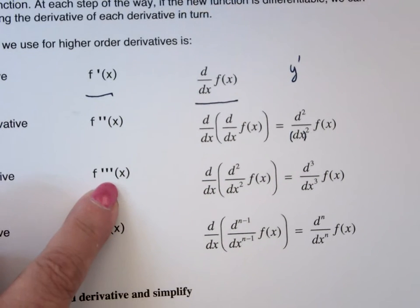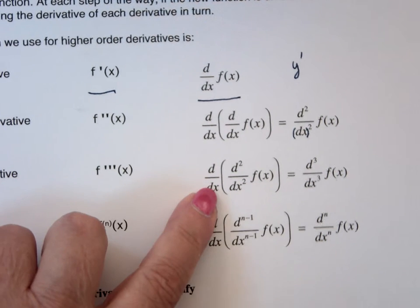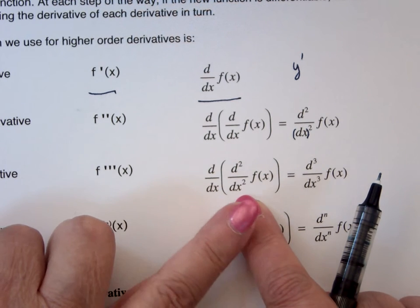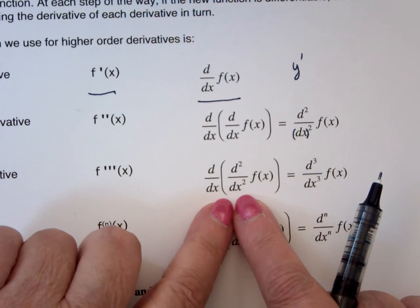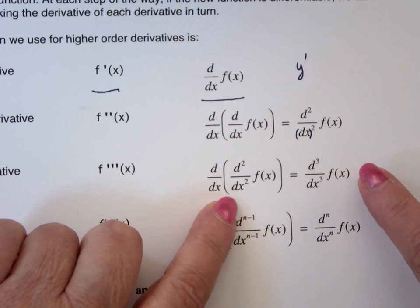Third derivative is triple prime, and it is the derivative of the second derivative. Like I said, we don't deal with that much except here we practice it, that's all. Derivatives are functions in their own right. They do have their own derivatives.